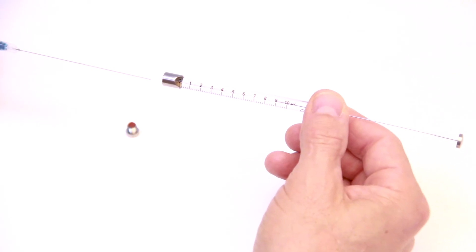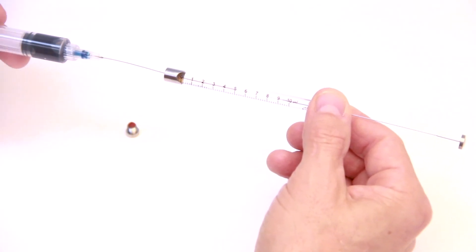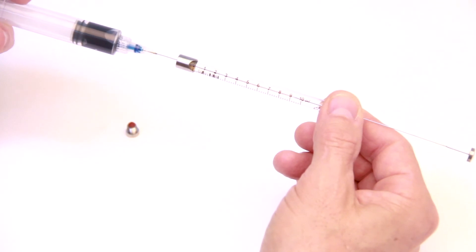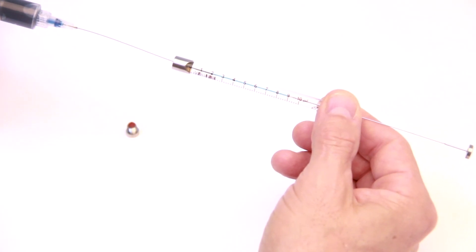Then insert the MicroFil into the syringe through the front, and as you are injecting fluid you just pull back on the MicroFil. And there you have it.